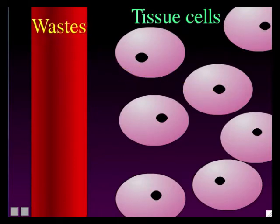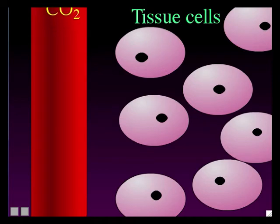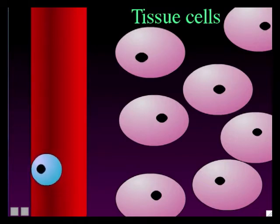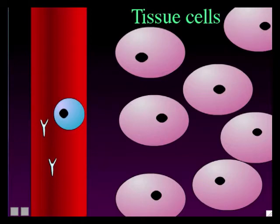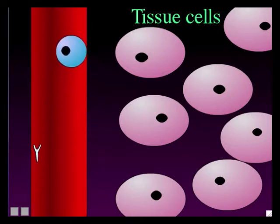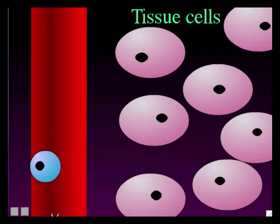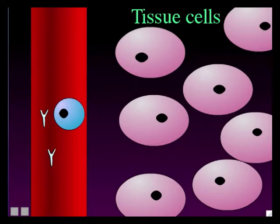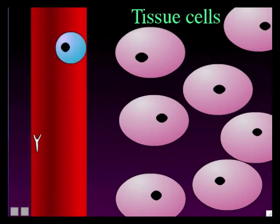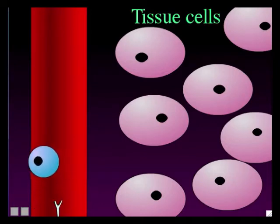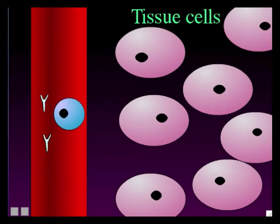In addition to delivering glucose and oxygen and taking away CO2 and other wastes, the blood also contains substances that are part of your immune system. Your immune system fights infections — bacteria and viruses. There's a type of blood cell called a white blood cell that patrols inside your body looking for bacteria, viruses, and other pathogens. Those Y-shaped figures are antibodies, which are also transported in your blood. Like white blood cells, they patrol throughout your entire body looking for pathogens to fight.